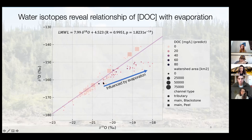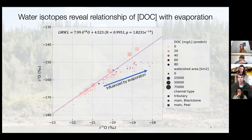We're looking at the landscape and the relationship between catchment landscape, the processes that occur in the landscape, and the DOC quantity and quality — including the degradability of dissolved organic matter. One of the things I want to show here is that evaporation can hint towards a different kind of process influencing the DOC concentration.